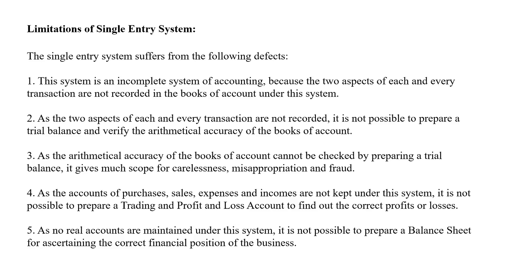On to the limitations of single entry system. This system is an incomplete system of accounting because the two aspects — debit and credit — of each and every transaction are not recorded in the books of accounts under this system. As the two aspects of each and every transaction are not recorded, it is not possible to prepare a trial balance and verify the mathematical accuracy of the books of accounts.